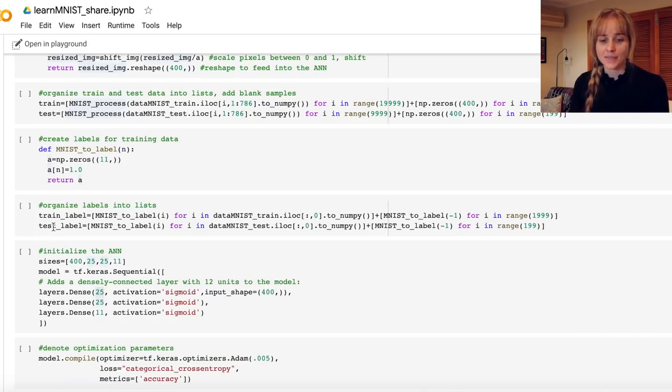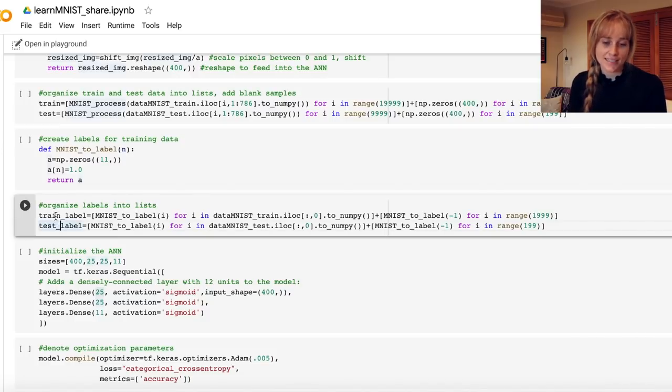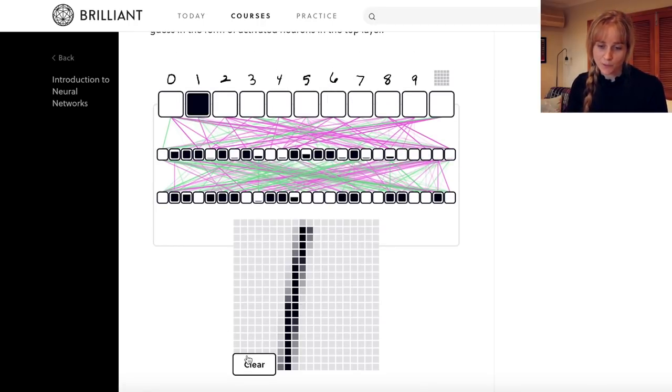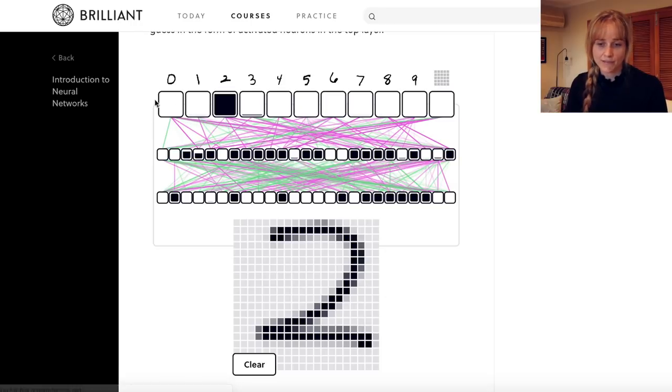The next important step is organizing the labels for the training and test data. Now our labels will actually be a vector of length 11, and that will be our 10 digits and our blank. And this vector will have zeros in every spot except for in the numbers that it thinks it is. So if it was confident that it was a two, then the vector would be zero everywhere except there would be a one in the spot corresponding to the two.